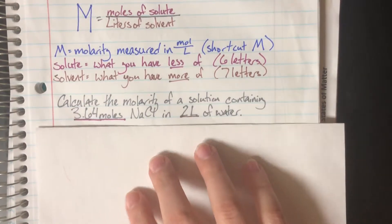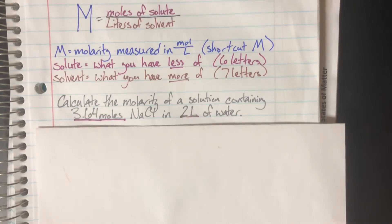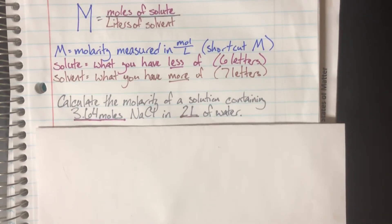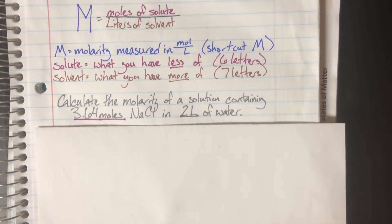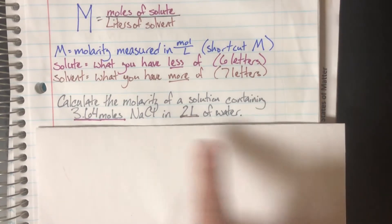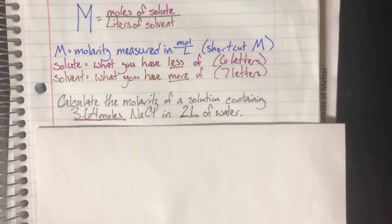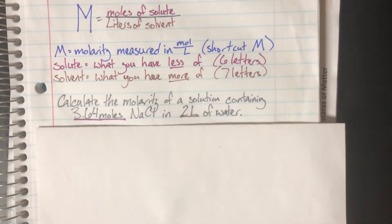Now let's look at a typical molarity problem. We need to calculate the molarity of a solution containing 3.64 moles of sodium chloride in 2 liters of water. I can already see which is the solute versus the solvent just from the units they're presented in.